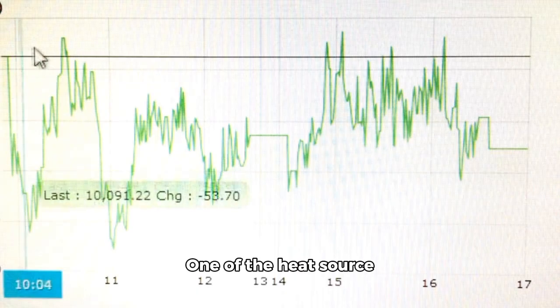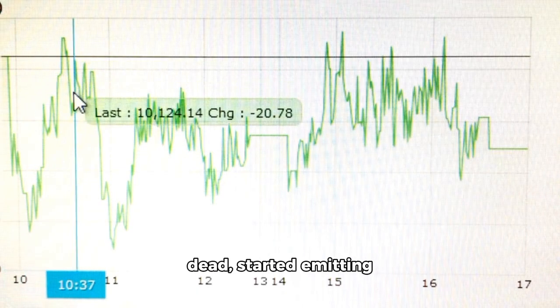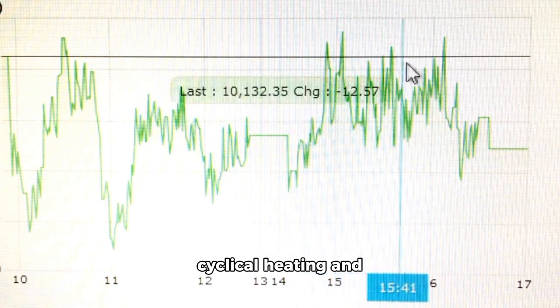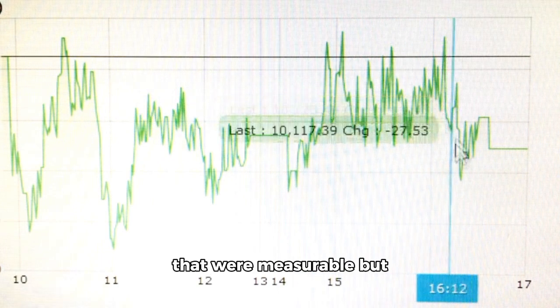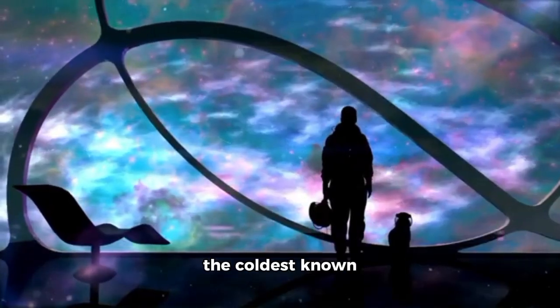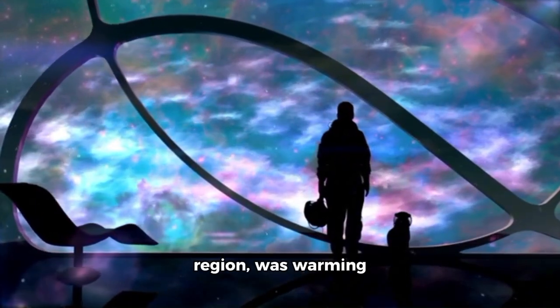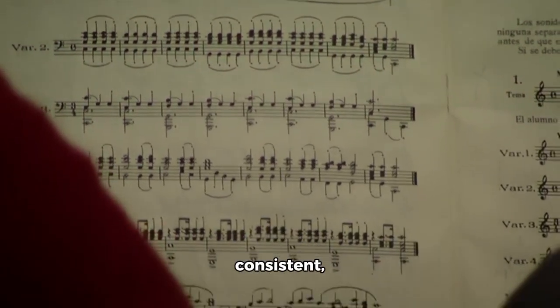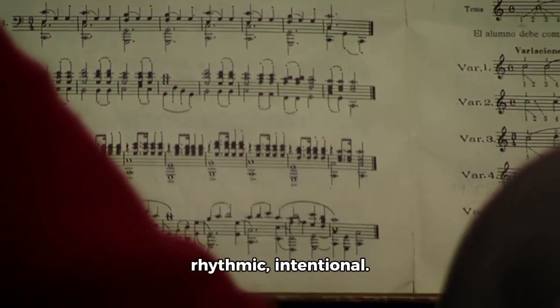Then came the most baffling part. One of the heat source sensors, thought to be long dead, started emitting temperature data showing cyclical heating and cooling patterns, changes that were measurable but had no plausible source. Voyager, swaying in the coldest known region, was warming up and not randomly. The rotations were every 4.8 hours, consistent, rhythmic, intentional.